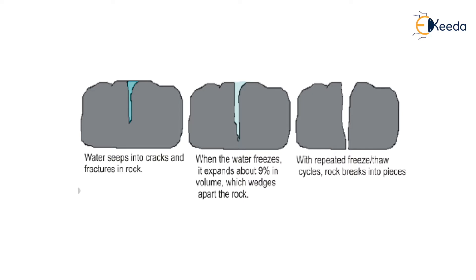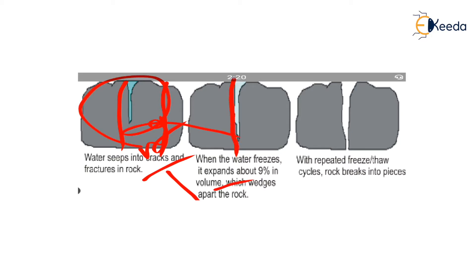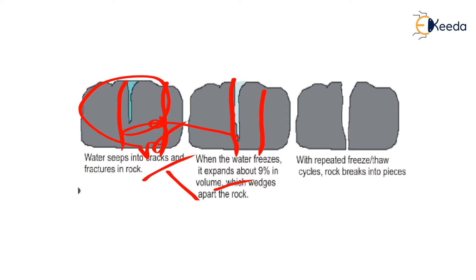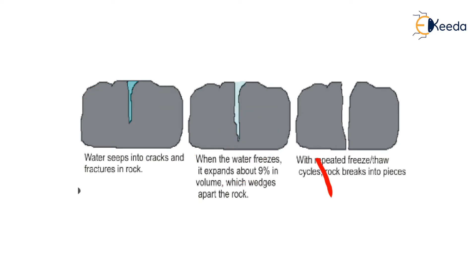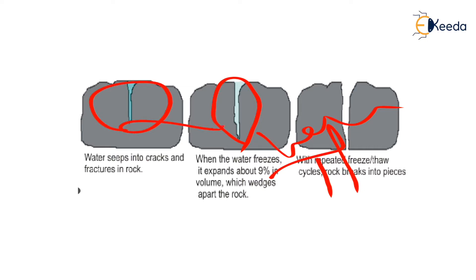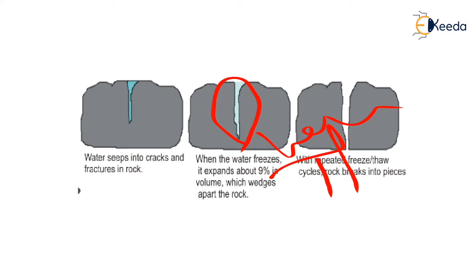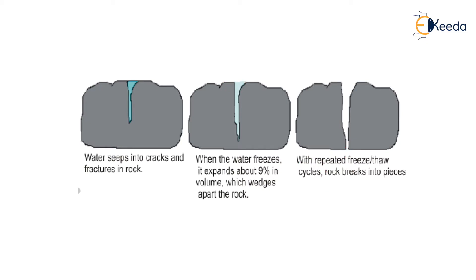The first type is frost action. In this process, a crack in the rock is filled with water. When the temperature decreases to near zero degrees Celsius, the water converts into ice. When water freezes, its volume increases by about 10 percent. This ice applies pressure on the walls of the fracture, causing it to widen. When temperature rises again, the ice melts back to water — this is called the thaw process. If freeze and thaw cycles continue repeatedly in a rock over a longer time, the rock disintegrates and forms smaller fragments.